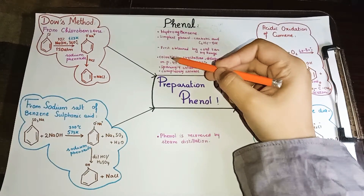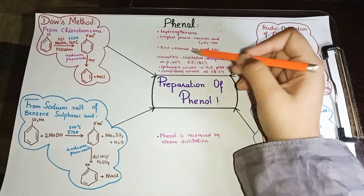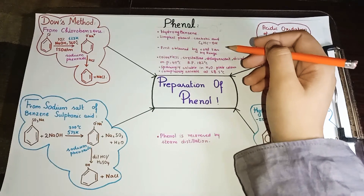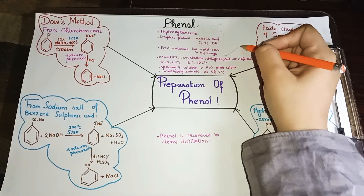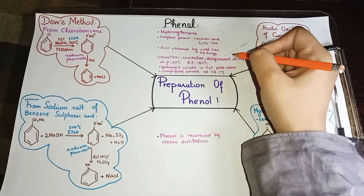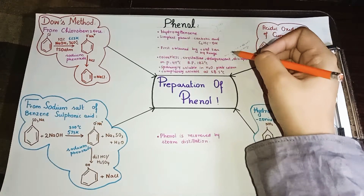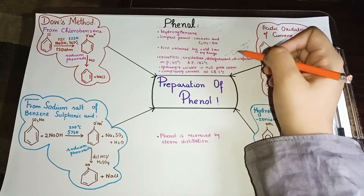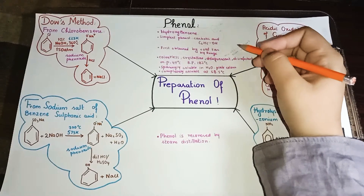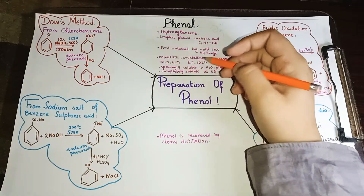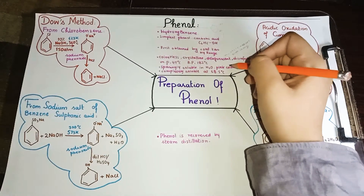It was first discovered by scientist Runge. The properties of phenol: it is crystalline and powder form. It is deliquescent and hygroscopic. It is also a disinfectant, used against non-living organisms. Its melting point is 40.1 degrees Celsius and boiling point is 182 degrees Celsius. It is soluble in water and turns pink color when dissolved.